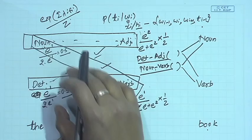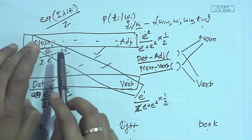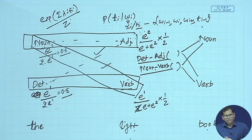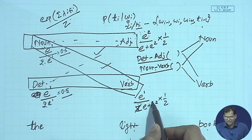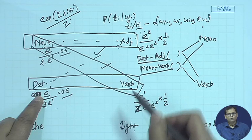To explain per-state normalization: when computing noun→verb and noun→adjective, we normalize so those two probabilities add up to 1. The same is done for determiner — we make sure its successors add up to 1. We are normalizing at each state. Why is this a problem? Let us take a hypothetical example.